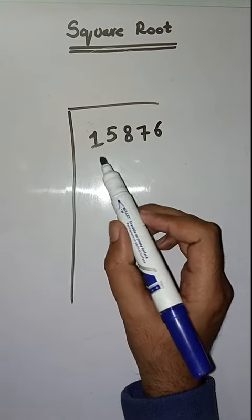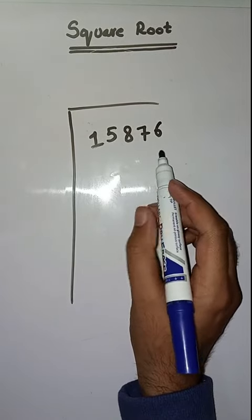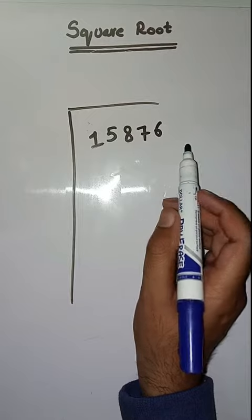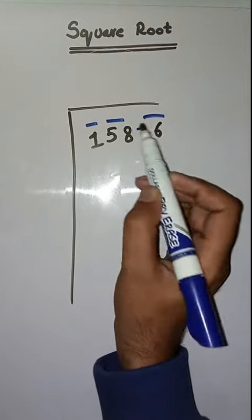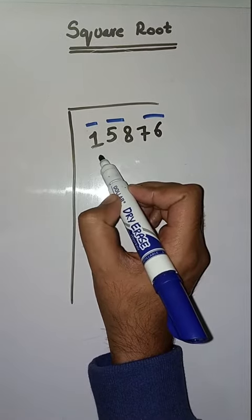We have to find square root of 15,876. So first step is we have to make pairs from right to left like this: 76, 58, and 1. So first we have to solve 1.